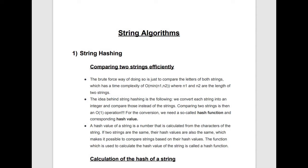Let's start with string hashing. Comparing two strings — checking whether they are equal or not — the brute force way is to compare both strings letter by letter: first compare the first character, if equal move to the second, and so on. If all characters are equal and the lengths match, the strings are equal. The net time complexity is O(min length of the strings).